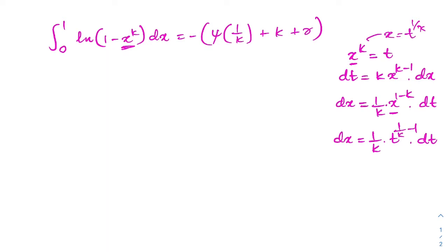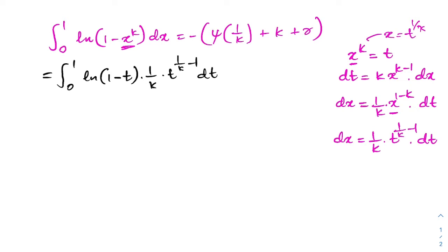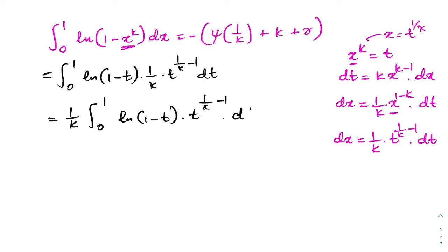Now we can plug into our integral. The limits remain 0 to 1. Natural log of (1 minus x^k) becomes natural log of (1 minus t), and dx becomes (1/k) times t^(1/k minus 1) dt. So we have (1/k) times the integral from 0 to 1 of natural log of (1 minus t) times t^(1/k minus 1) dt.